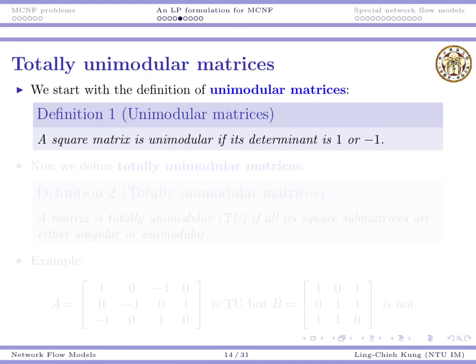We need several things. We need to have the definition of unimodular matrices. A square matrix is called unimodular if its determinant is 1 or minus 1.